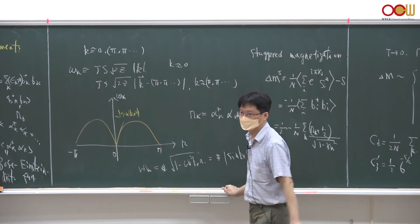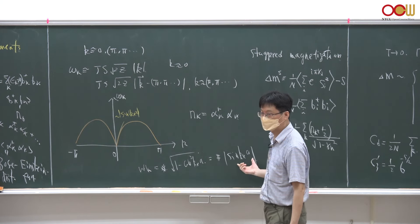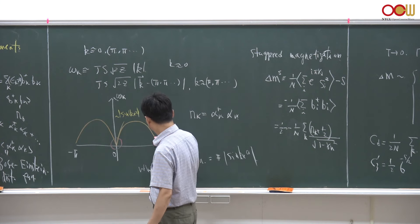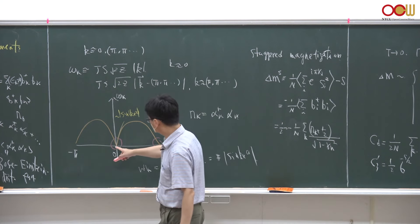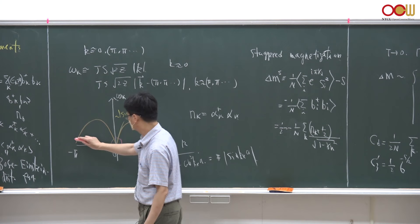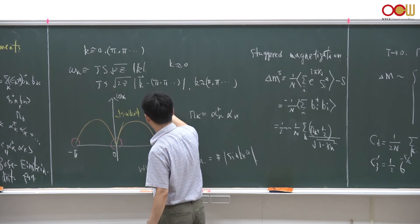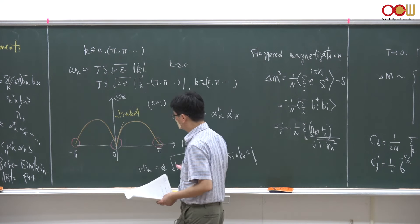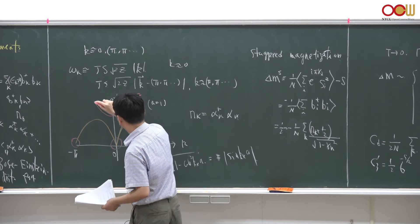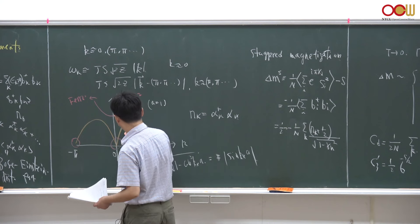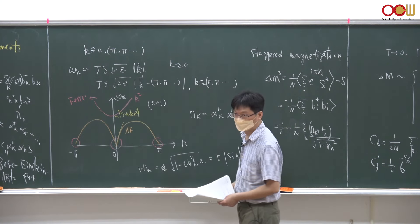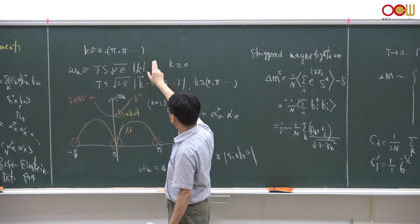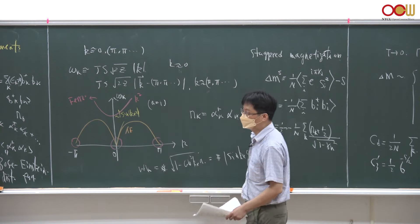In 1D, omega_k is proportional to the absolute value of sin(k_x * a), giving a dispersion with two gapless points: k = 0 and k = ±π. This is very different from the ferromagnetic case where dispersion is quadratic (k^2). For the antiferromagnet the dispersion near k = 0 or k = ±π is linear, not quadratic. We can Taylor expand the dispersion near these two gapless points.